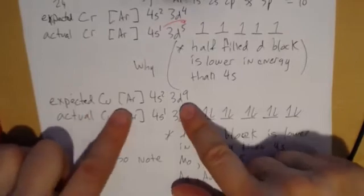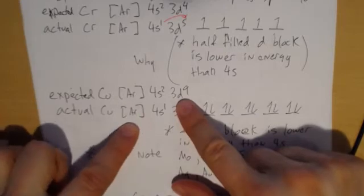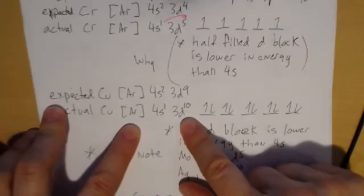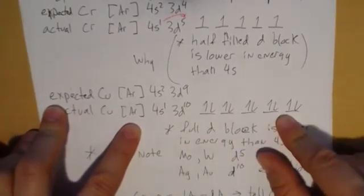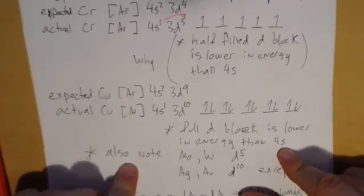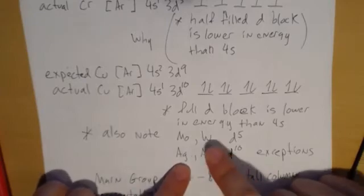Copper has a similar motif. This is the expected electron configuration of copper: 4s2 3d9. Actual—again, steals one from the S, gives it to the D, and you get a full D block. The full D block is lower in energy than the 4s.